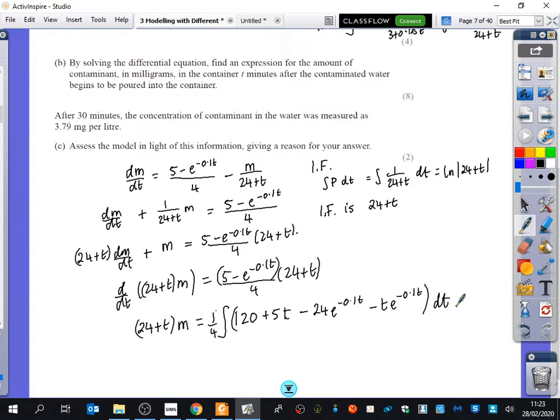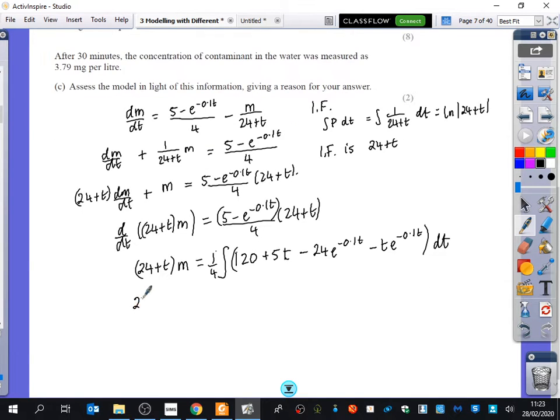Which of these is the most difficult one to integrate? The te. Yeah, what do you need to do? You need to do integration by parts for that bit. So we've got 24 plus t times m equals a quarter, and I'm going to do some big brackets here. 120t plus 5 over 2t squared. What does this bit integrate to? So we get e to the minus 0.1t plus 240e to the minus 0.1t. And now I'm going to do integration for this bit up here.